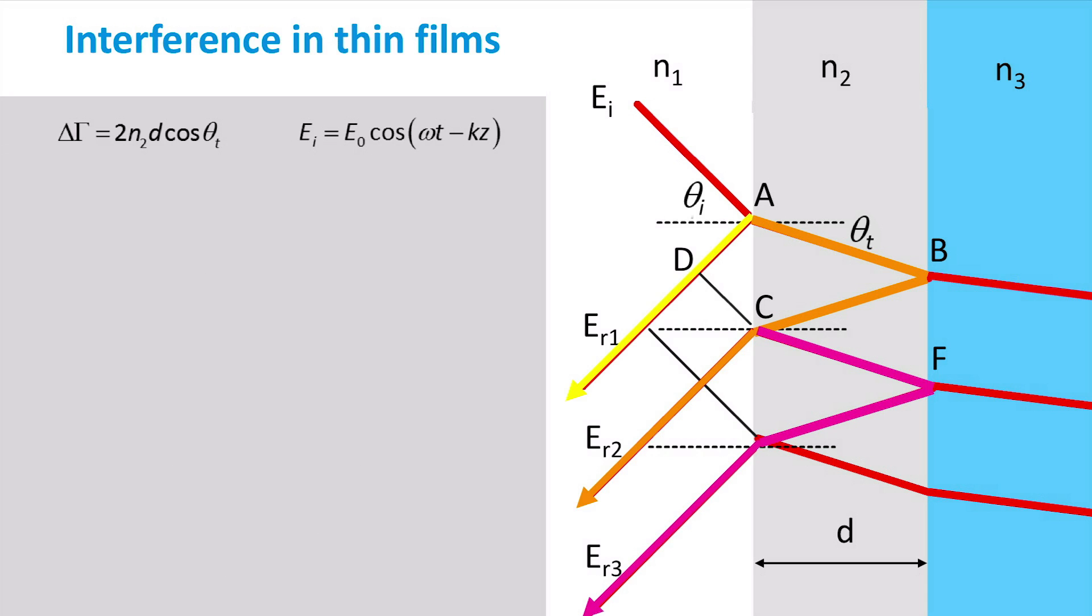The total reflected electric field strength of an incident wave is equal to the sum of the electric field strength of all reflection events. It can therefore be described by the reflected wave of the 1-2 interface plus the sum of all reflections at the 2-3 interface that are transmitted at the 1-2 interface.